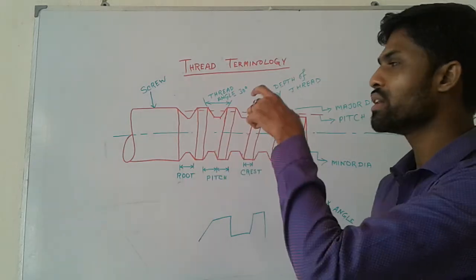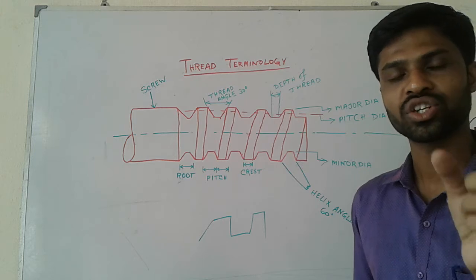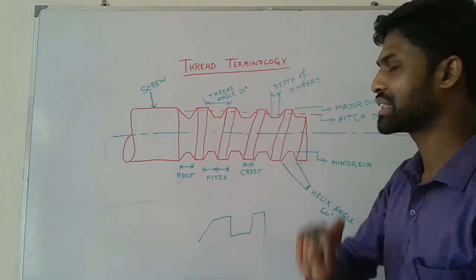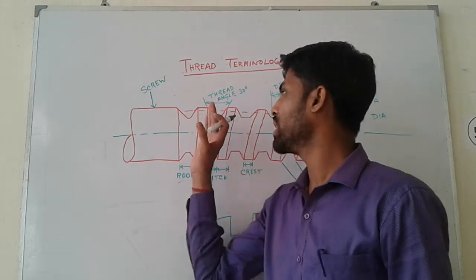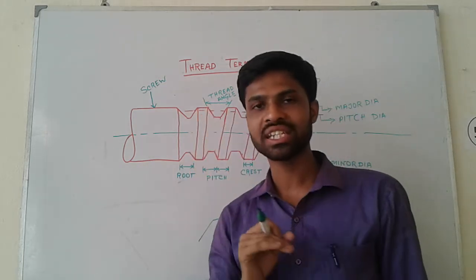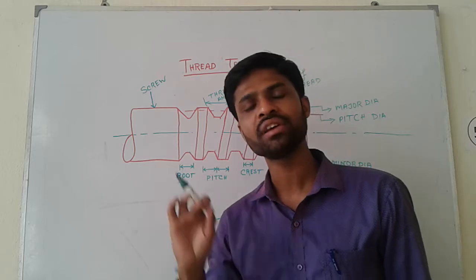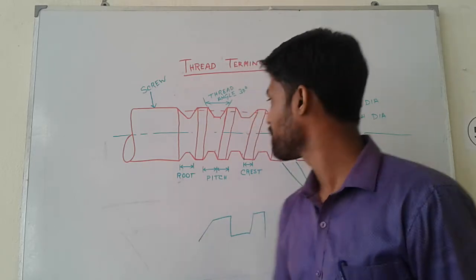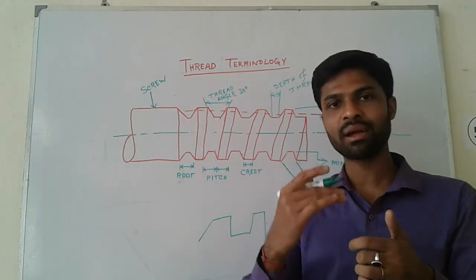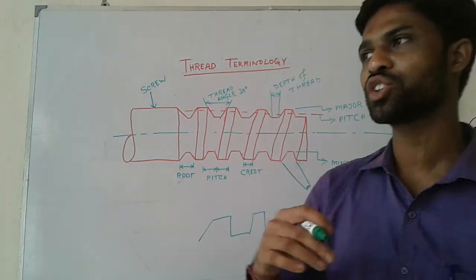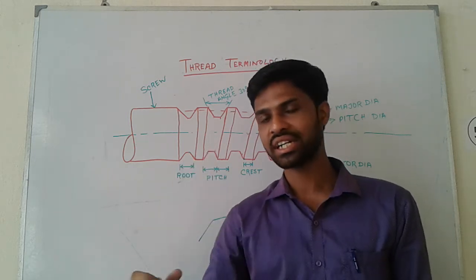The thread angle is 60 degrees. The root and the crest together define the thread angle. The depth of the thread is the distance between the major diameter and the minor diameter.